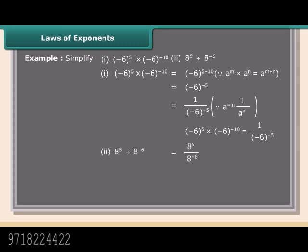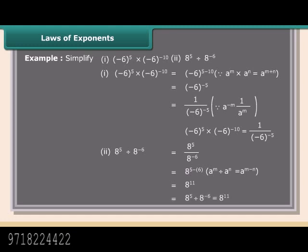8 raised to the power 5 divided by 8 raised to the power minus 6 equals 8 raised to the power 5 minus (minus 6), since A raised to the power M divided by A raised to the power N equals A raised to the power M minus N. This equals 8 raised to the power 11. Therefore, 8 raised to the power 5 divided by 8 raised to the power minus 6 equals 8 raised to the power 11.